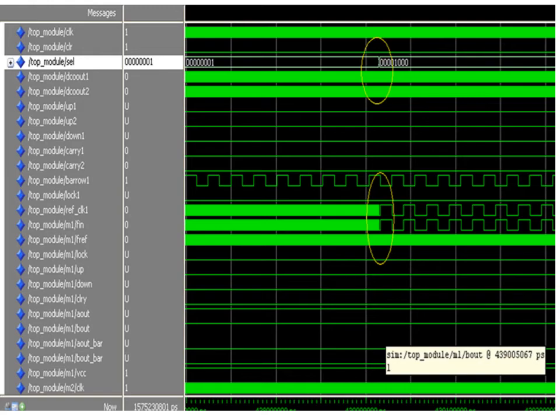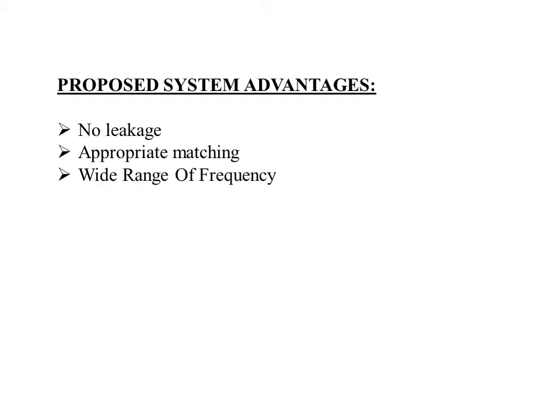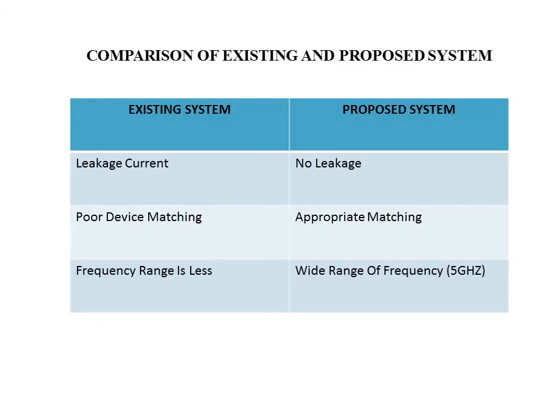Moving on to the proposed system advantages: the PLL I have designed is an all-digital PLL, a completely digital system. As we know, a digital system has a wider range of applications. When there is no leakage in the digital system, there will be appropriate device matching. A wider range of frequencies is also provided, as shown in the waveform. The comparison table shows: the existing system has leakage current and poor device matching, while the proposed system has no leakage current and appropriate matching. The frequency range is very limited in the analog system, whereas in the digital system, a wide frequency range of 5 GHz is achieved.